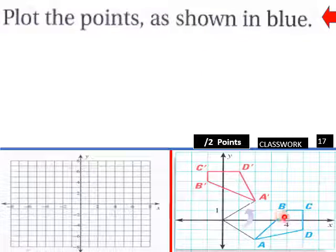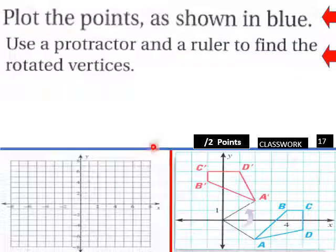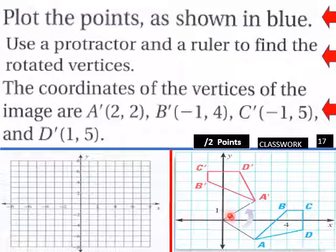Plot the points as shown in blue. So your points are here. Plot that over here. Use a protractor and a ruler to find the rotated vertices. So this is coming out of the origin here. So this is a 90 degree rotation that originates in your origin. So the coordinates of the vertices of the image are A prime would be 2, 2 for A, 2, 2. And we go from 2, negative 2. So you're probably going to just change our Y coordinates here would go negative.